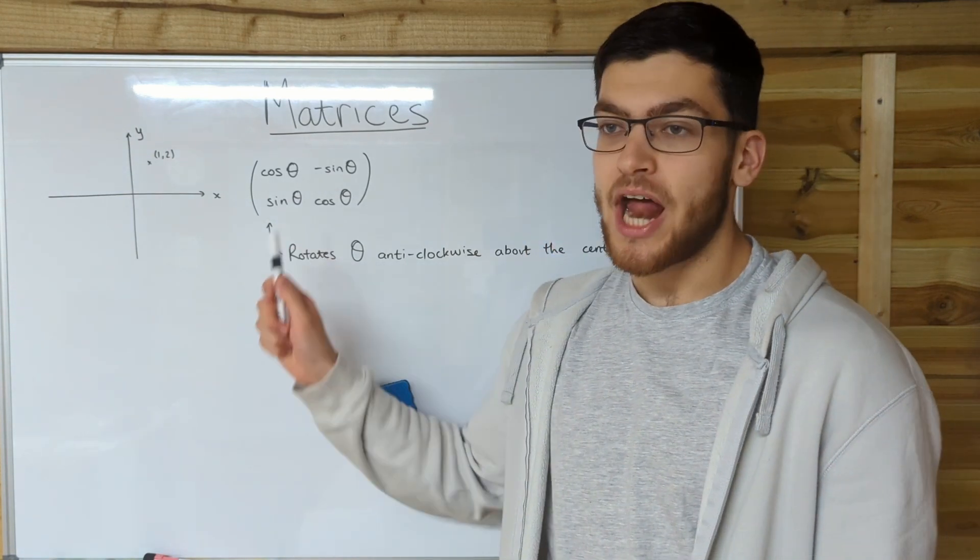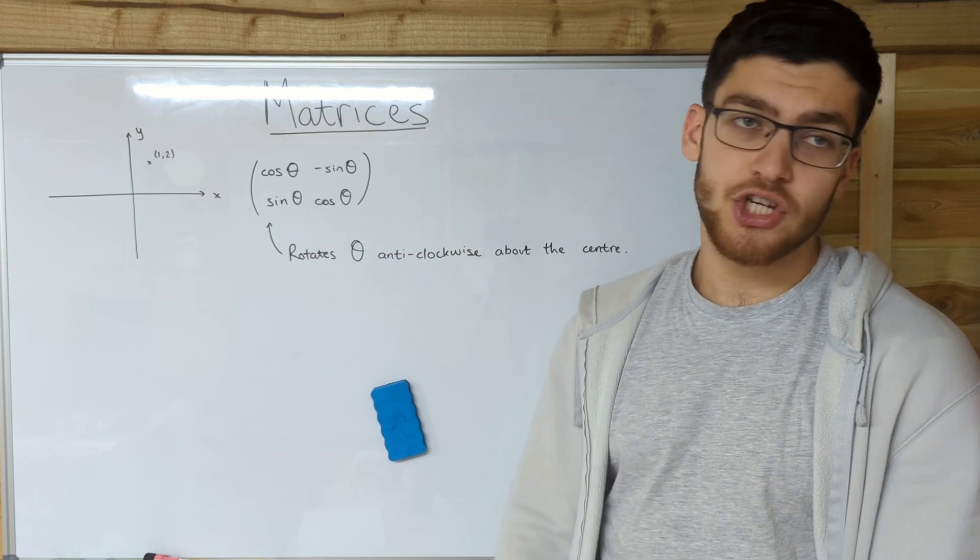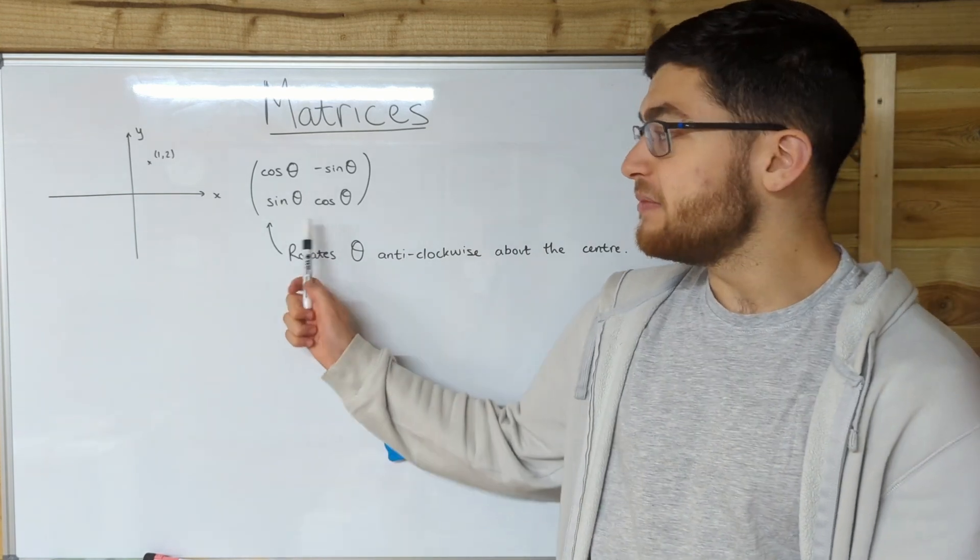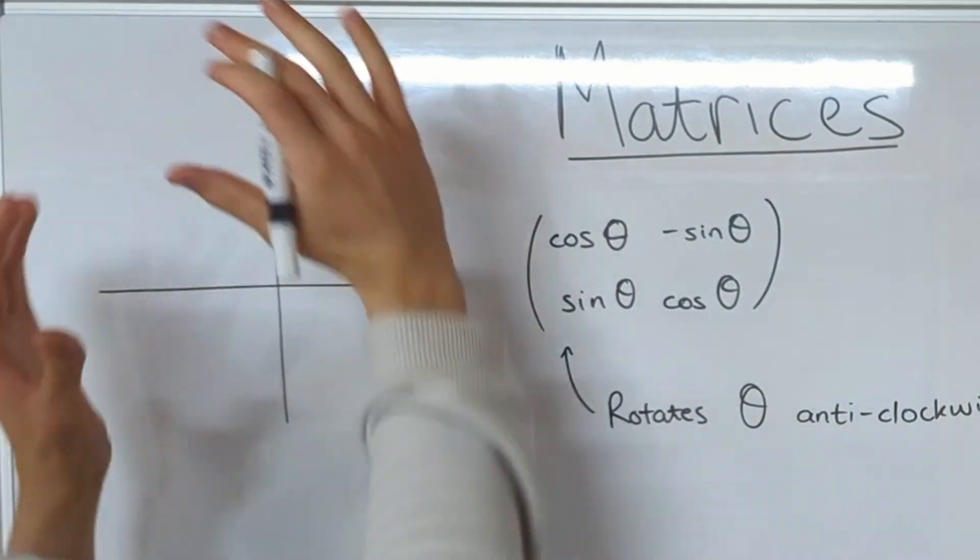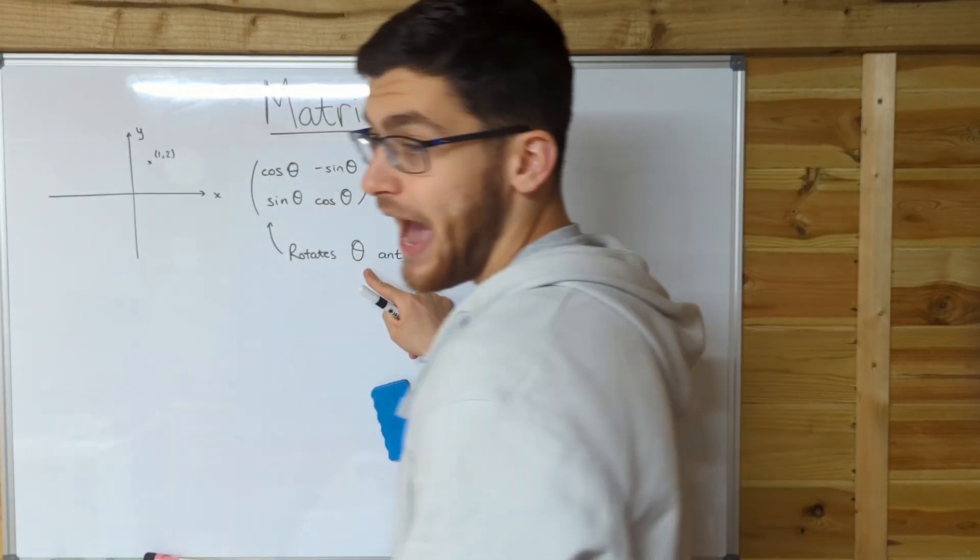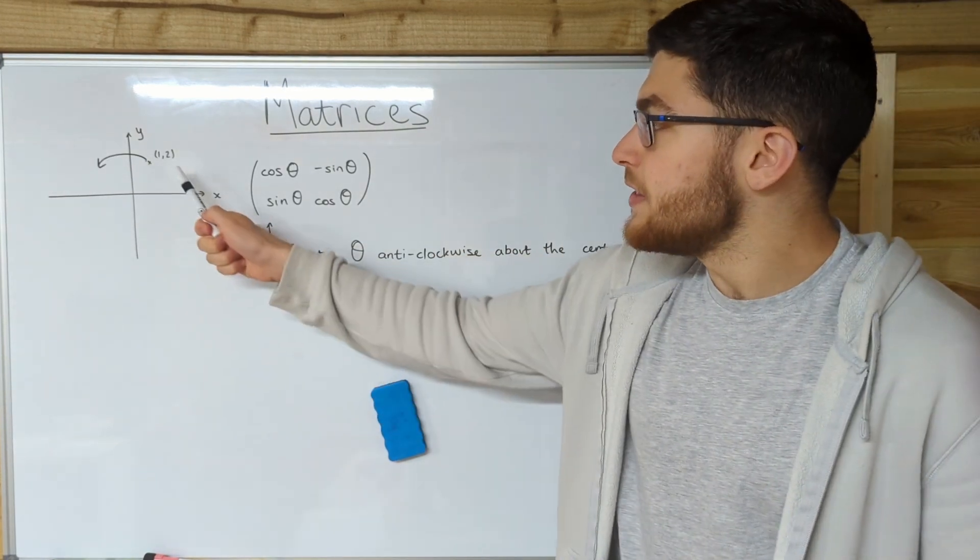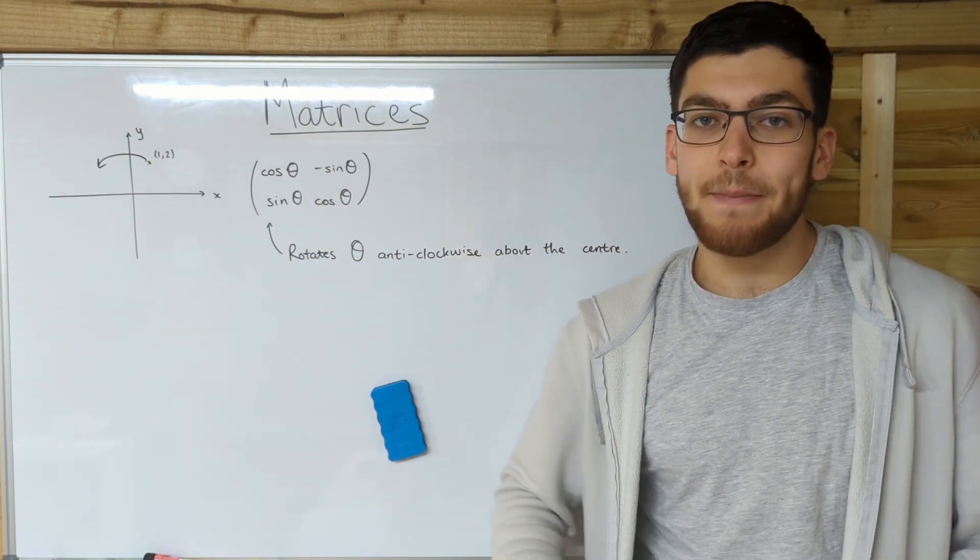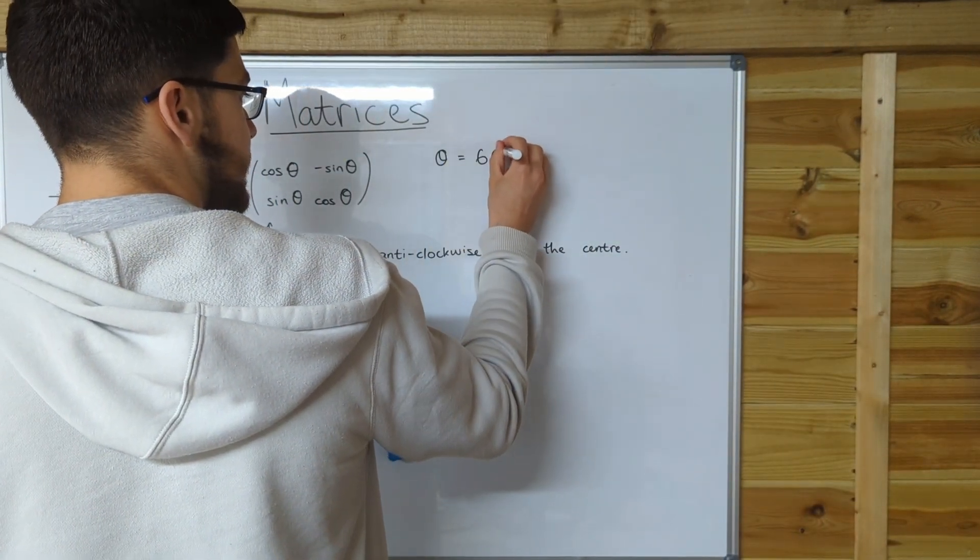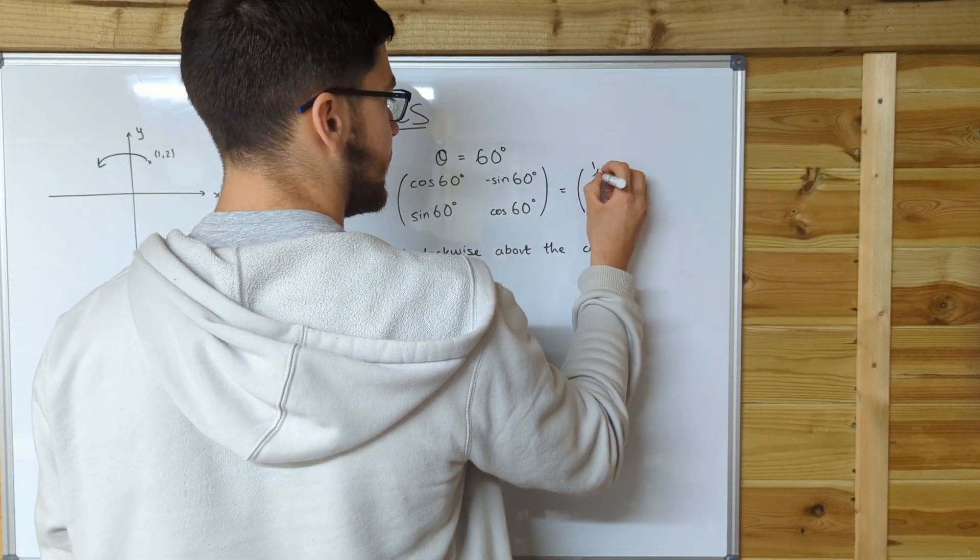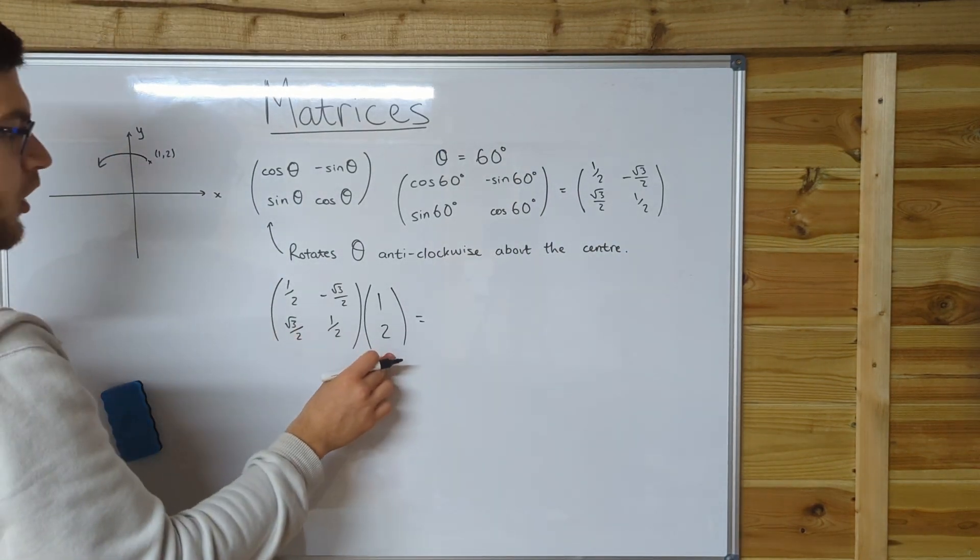All right, so this is the rotation. Harry, if I have to tell you one more time. So this is the rotation matrix. And if you multiply this matrix by any point on this plane, it'll rotate that point theta degrees anticlockwise about the centre, okay? So let's say we want to rotate this point 60 degrees about the centre. So we put in theta equals 60 degrees. So when we evaluate it, cos 60 is a half and sine 60 is root 3 over 2.